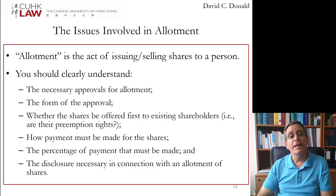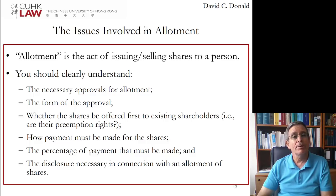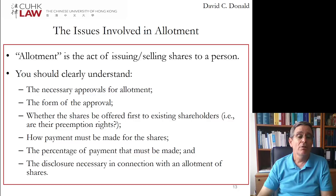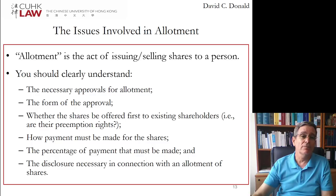When an allotment is made, it's necessary to declare the allotment and the names of the new members to the company's registry. This is part of the transparency function that the company's registry performs for all investors, creditors, and other companies vis-à-vis the companies incorporated in Hong Kong.